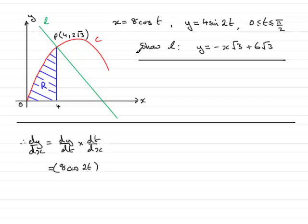Now for dt by dx, what we've got up here is x equals 8 cos t. So what we can do is find dx by dt, which is equal to minus 8 sine t, and then from that it follows that dt by dx will be the reciprocal of that. So that will be minus 1 over 8 sine t. So what I'll do is I'll pop that in here, so we have minus 1 over 8 sine t.